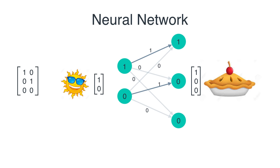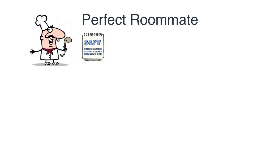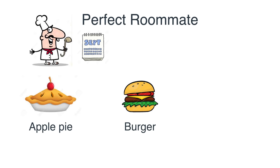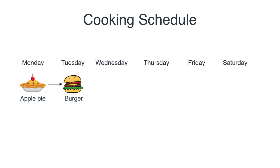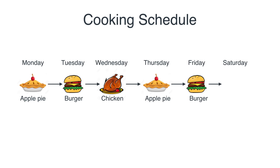That was a simple neural network. Now let's go to a slightly more complicated problem. We still have the perfect roommate who cooks every day, but now he doesn't base his cooking on the weather. He's very organized and methodical — he just cooks in sequence. If he cooks apple pie one day, the next day he cooks a burger, then chicken, then apple pie again, and so on. We can always tell what he'll cook based on what he cooked the day before.